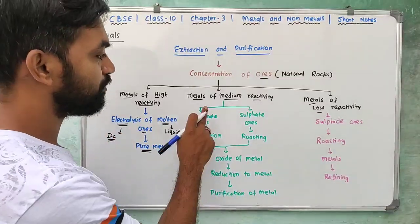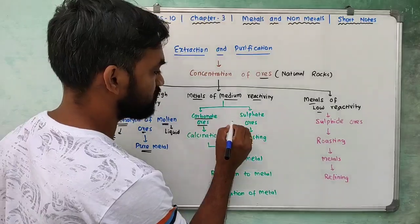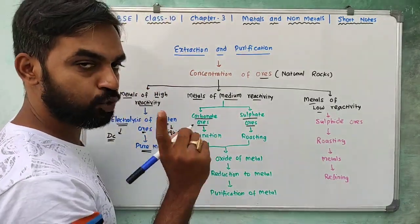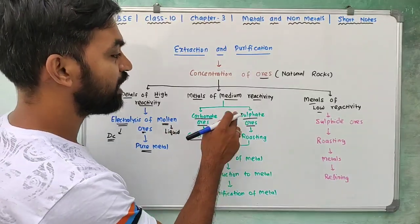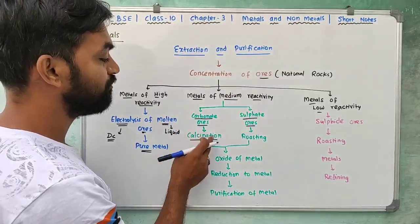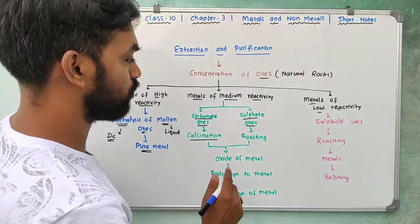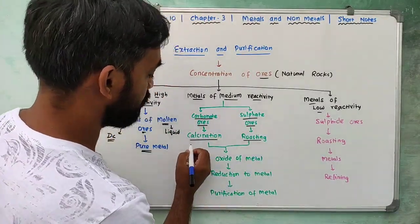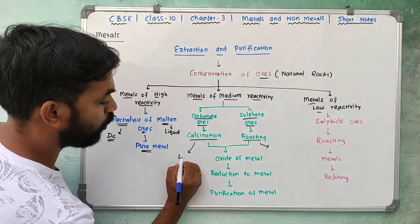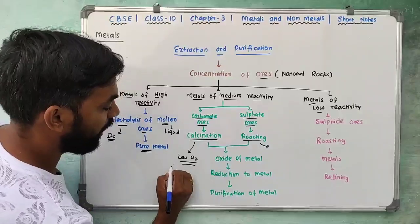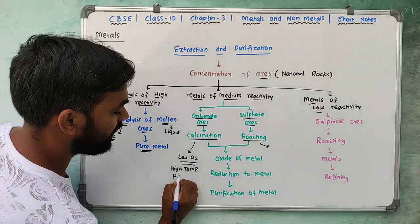Metals of medium reactivity use two types of ores: carbonate ores and sulfate ores. Carbonate ores are processed by the calcination method to separate the metal. Calcination involves heating at high temperature with limited or no oxygen supply.